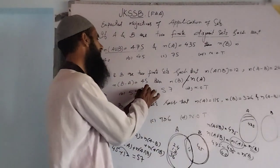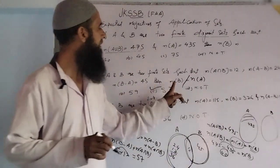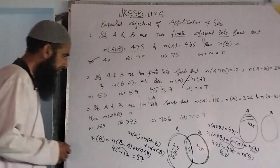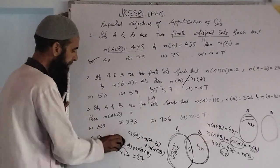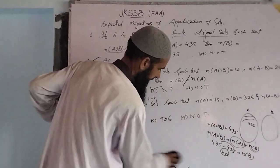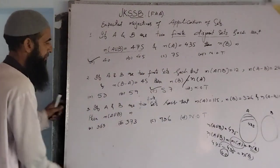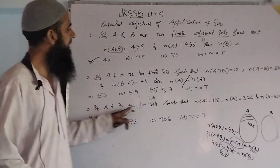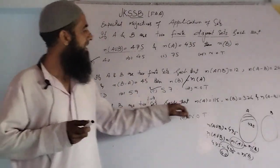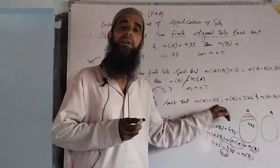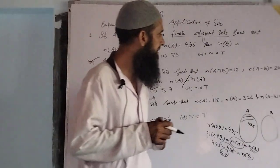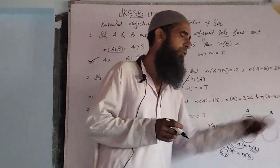Clearly option C is the correct solution if we have to find number of elements in B set. Now dear students, in the third objective: if A and B are two finite sets, n(A) = 115, n(B) = 326, and n(A minus B) = 47.